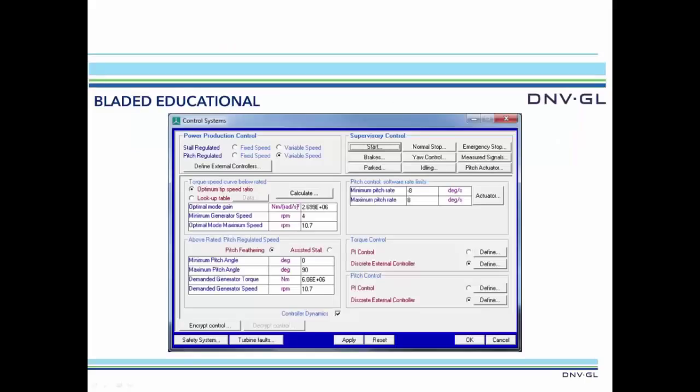This equation is used by Bladed in the control window. After a complete turbine model has been entered, Bladed can use the equation to work out the optimal mode gain value automatically, simply by clicking calculate.